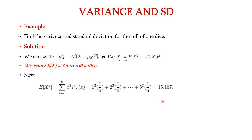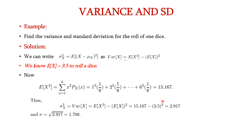That gives 15.167. So we subtract E of x whole square, which is 3.5 whole square, and we get 2.917 as the variance. If we take the square root we get 1.708, which is nothing but the standard deviation. Thus we have found the variance and standard deviation for rolling one dice.